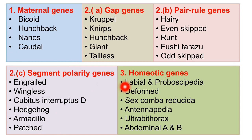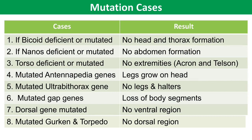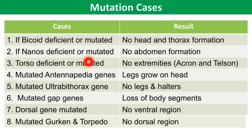Now the mutation cases. If bicoid is deficient or mutated, there will be no head and thorax formation — a lack of anterior structure. If nanos is deficient or mutated, there will be no abdomen formation. If torso is deficient or mutated, no extremities form — that is, no acron or telson. If the Antennapedia gene is mutated, this results in leg growth on the head region in place of antennae. If Ultrabithorax is mutated, there will be loss of certain legs and halteres.